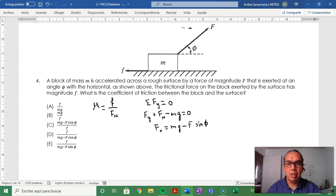Therefore, mu is supposed to be the ratio of friction force f to mg minus f sine of the angle. And that is option E.